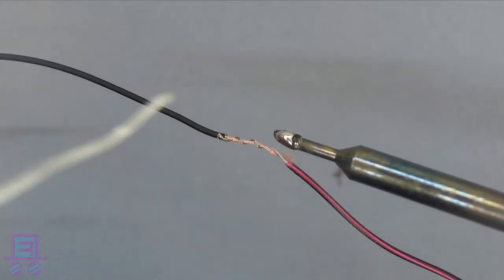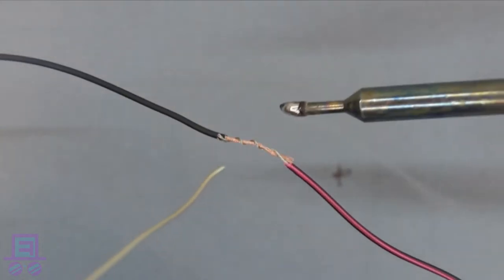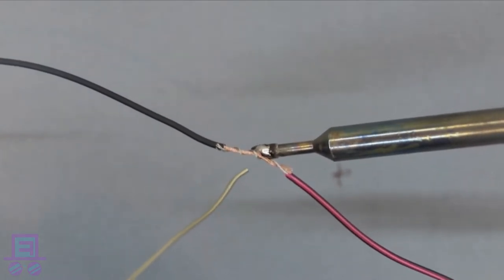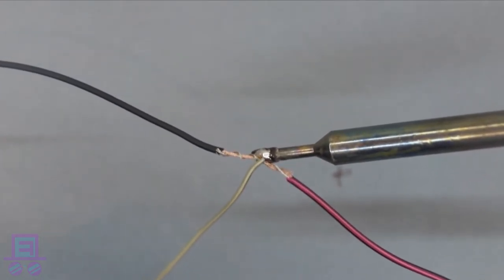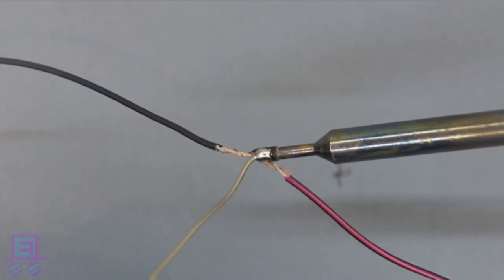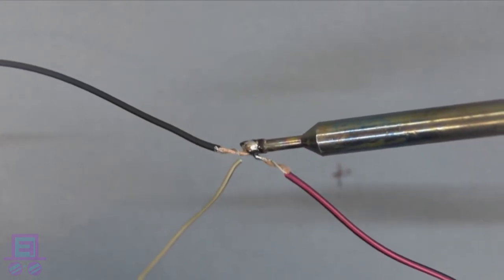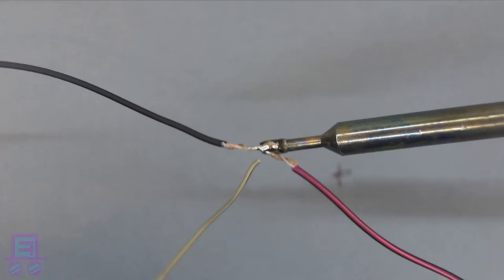Once we have a little blob of solder, we're going to place it on the wire like so, and keep our solder ready. Once the wire is piping hot, press the solder against it and you should see the metal flow through the wire and give everything a nice glossy coating.